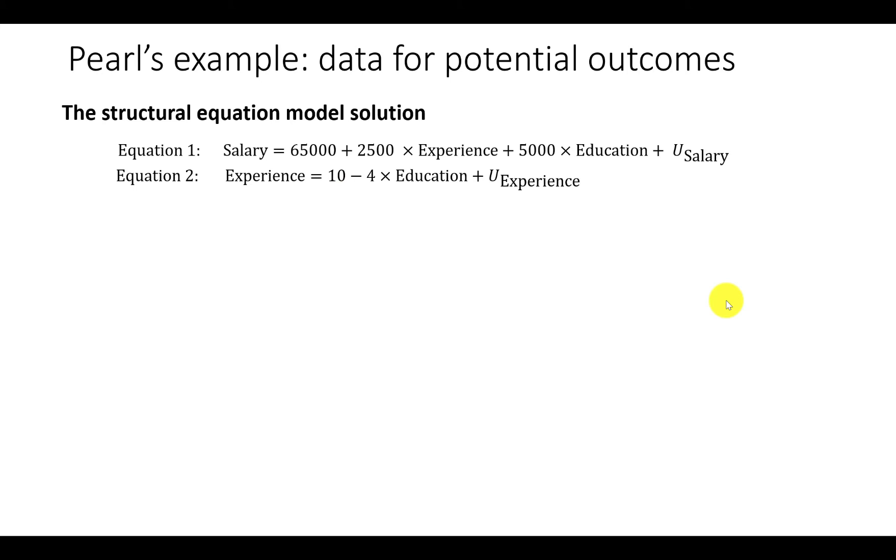The counterfactual calculation involves three steps. Step one is called abduction, where we use data about Alice to estimate her special features. That's the u values, the exogenous variable values.